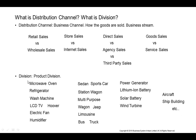What is division? It comes from product division. For example, refrigerator, washing machine, microwave, liquid crystal TV, humidifier — if you are in the automotive business, is this a sedan, sports car, station wagon, multi-purpose vehicle, bus, or truck? Or if you are selling power generators, lithium-ion batteries, solar batteries, or wind turbines — you can imagine the distinction.